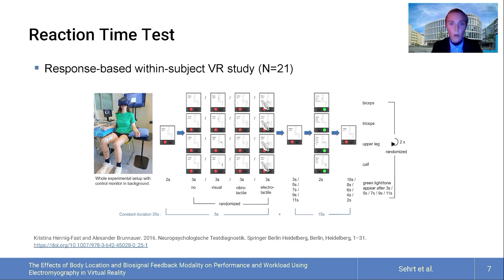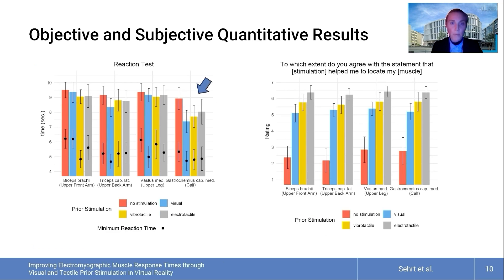Thus, all participants experienced the same experimental trial length of 64 minutes. Each prior stimulation, muscle location and duration until the green light and tone were presented twice and in a fully randomized order. By the comparison of the mean reaction times of the different muscles to various prior stimulations and the no-stimulation condition, here in red, we found that prior stimulation consistently shortened isometric muscle contraction times.